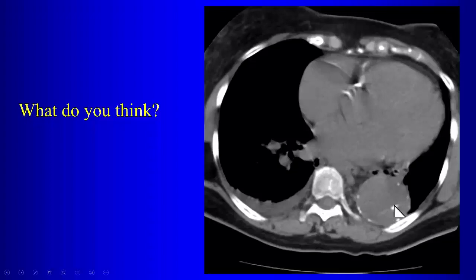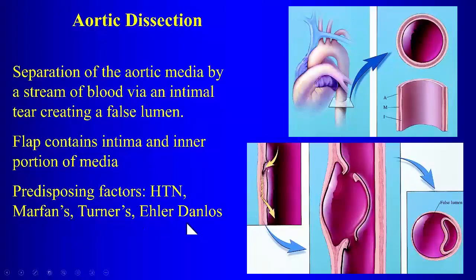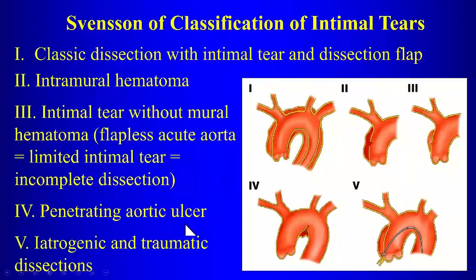On this non-contrast CT, a displaced intimal calcification and visible dissection flap are signs of aortic dissection. Aortic dissection involves separation of the media by a stream of blood, creating a false channel and a double-lumen aorta. The flap is composed of intima and an inner portion of the media. Predisposing factors include hypertension, Marfan's, and Turner's syndrome.